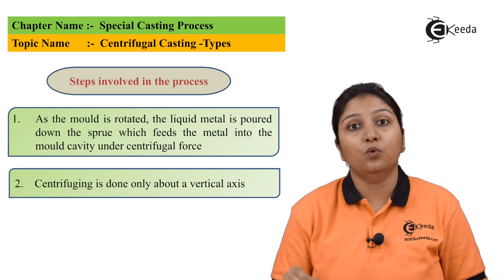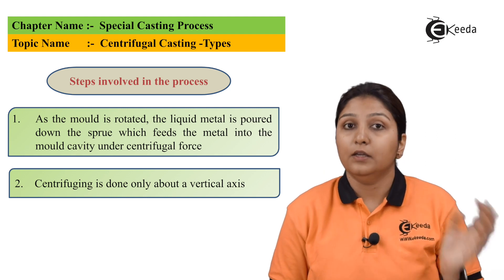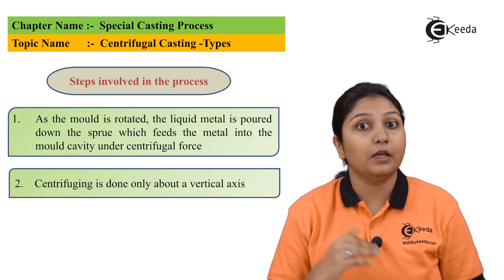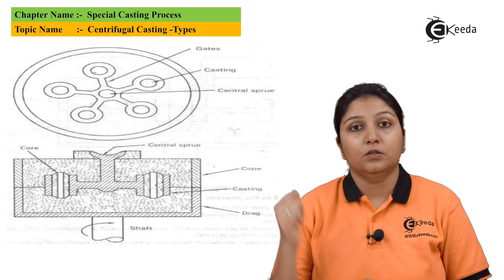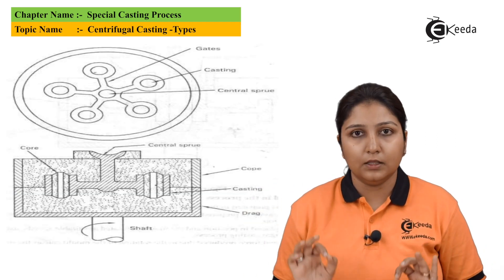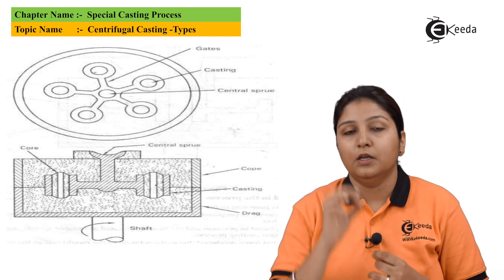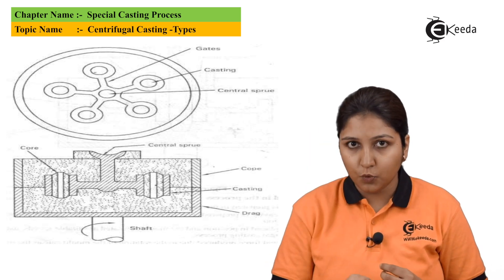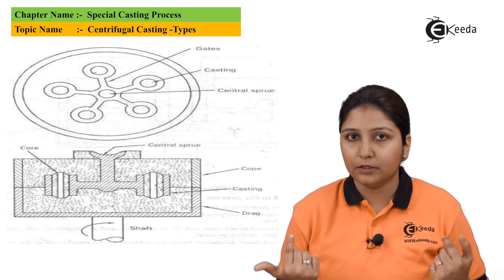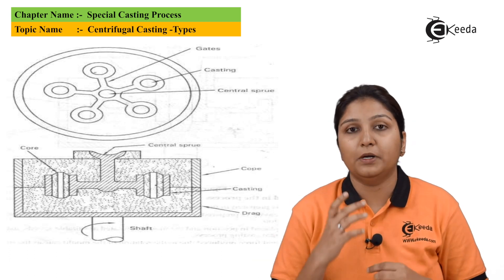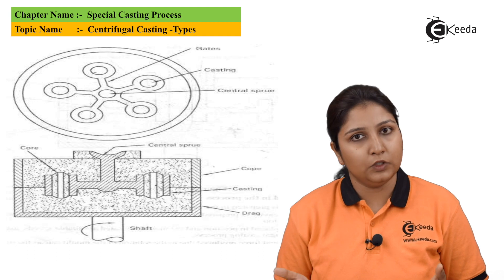Centrifugal action can only take place in the vertical direction in centrifuge casting — unlike in true centrifugal casting, it cannot take place in the horizontal direction. In this diagram, it is clearly seen how exactly centrifuging takes place. There is a single sprue from which the material comes, and there are different small gates through which your material goes to your exact casting. Thank you for watching this video.